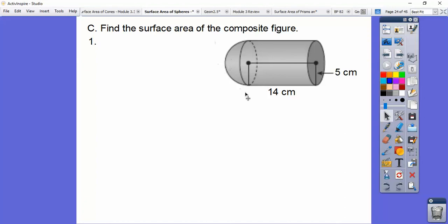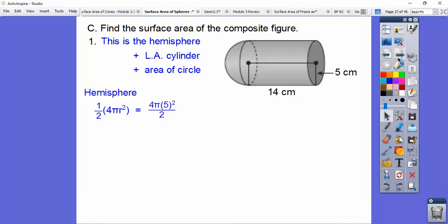Remember, the surface area of a sphere. Then we'll add the lateral area of the cylinder, and then we'll add this circle right there. So it's the hemisphere, hemisphere is half of a sphere plus the lateral area of the cylinder plus the area of the circle.